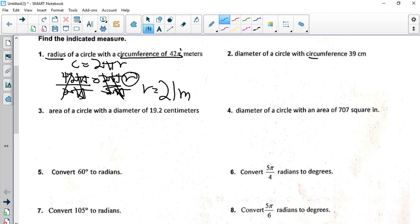Okay, circumference is 39, but this time we're looking for the diameter. So I'm just going to start off with my diameter version. Pi times diameter. So I know 39 centimeters equals pi times diameter. If I divide by pi, I will get a diameter of, rounded, 12.4 centimeters.